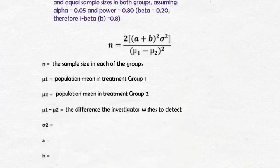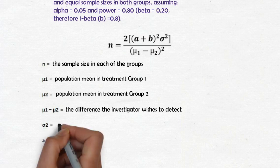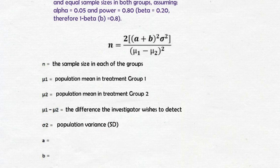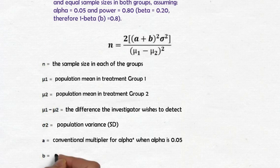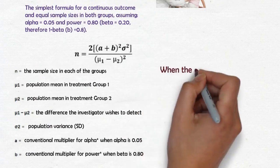Mu1 minus mu2 equals the difference the investigator wishes to detect. Sigma squared equals population variance (SD). a equals conventional multiplier for alpha when alpha is 0.05. b equals conventional multiplier for power when beta is 0.80.